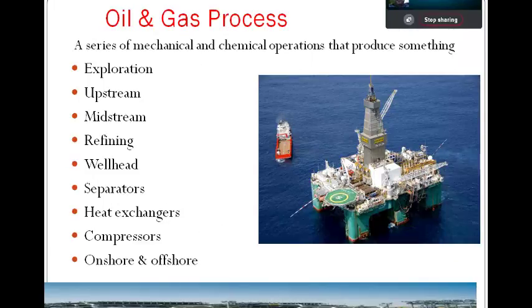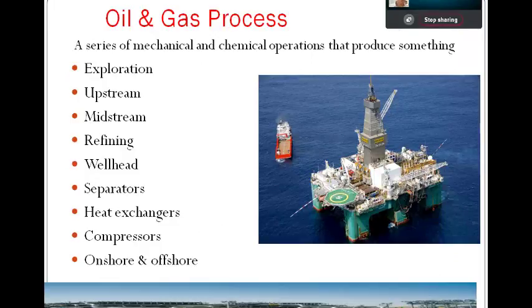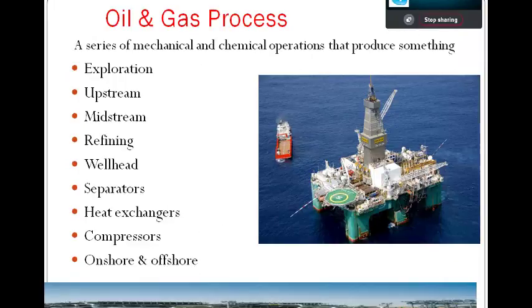A process is a series of mechanical and chemical operations that produce something. When you have a well, oil coming out of it consists of several things: oil, gas, water, sulfur, and toxic gases. All of these things pass through several stages. The oil passes through multiple stages to be separated into different categories. Refineries do all the operations to refine the oil and separate all components.